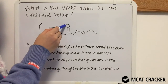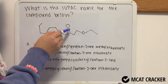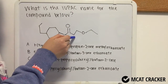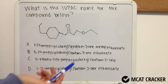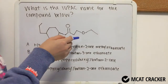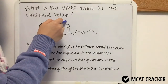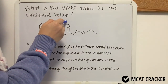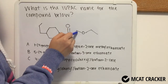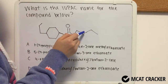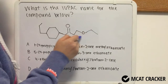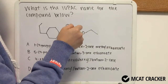Here I see a C double bonded to an O. This is a ketone group because it's attached to two carbons, rather than an aldehyde where one would be a hydrogen. I also see an ether group here, where there's a carbon attached to an oxygen to another carbon. Here's our ether group.